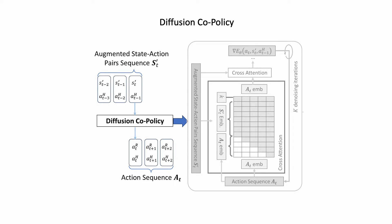Diffusion co-policy is a diffusion model that takes as input a sequence of past human actions and table states augmented with map information and outputs a sequence of future joint human-robot actions.